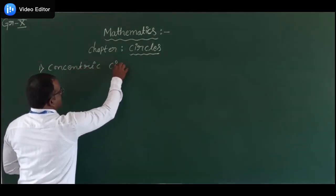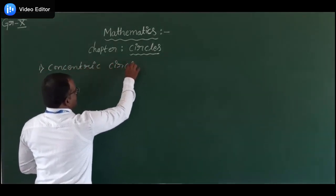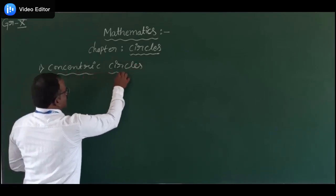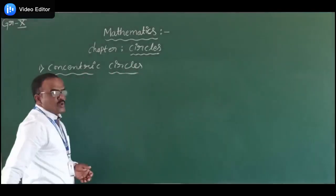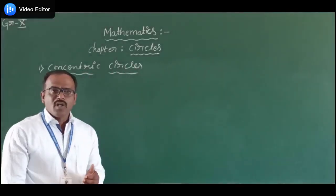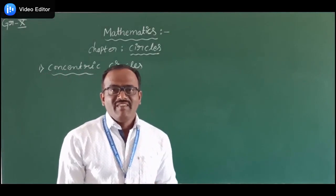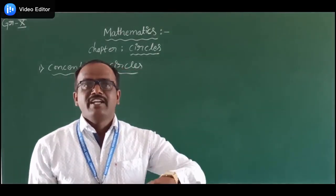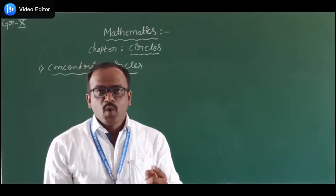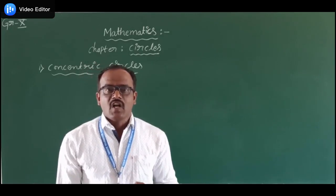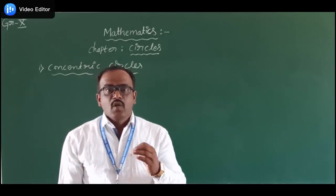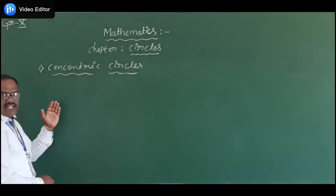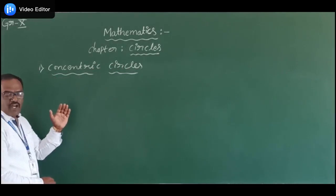What is the meaning of concentric circles? If two or more circles are having the same center but different radii, then those circles are called concentric circles. Now I am going to draw diagrams of the concentric circles.